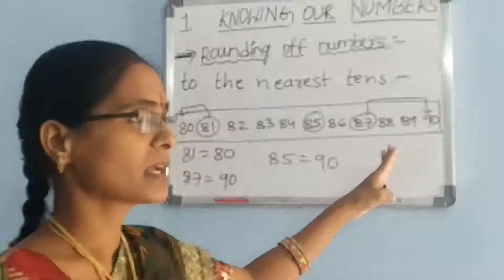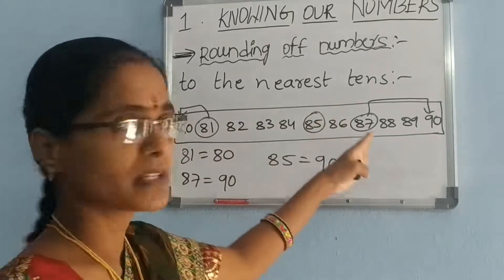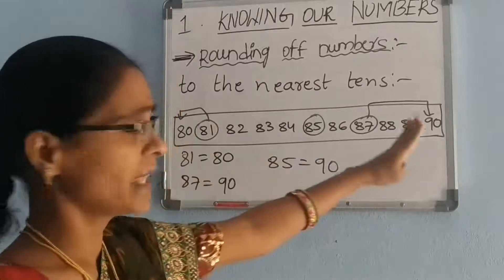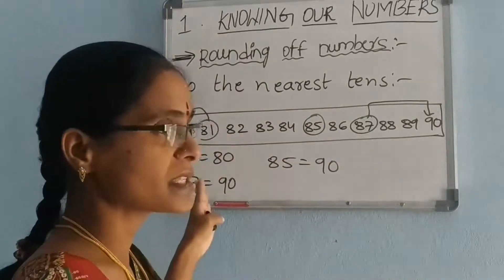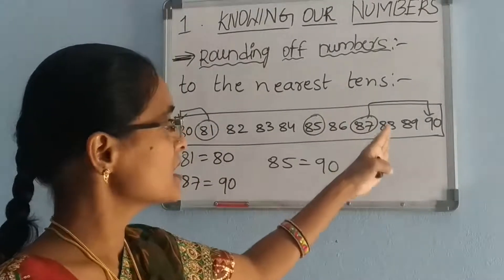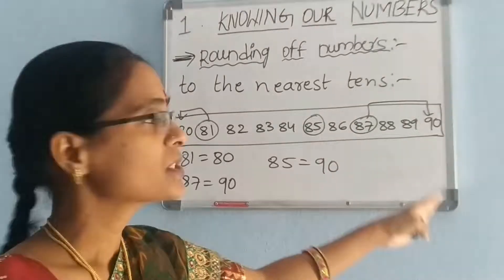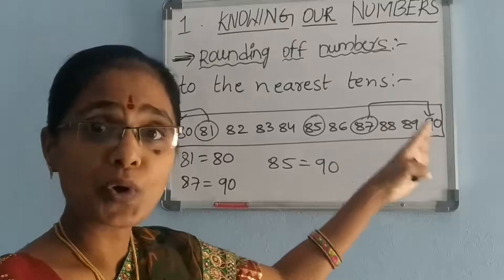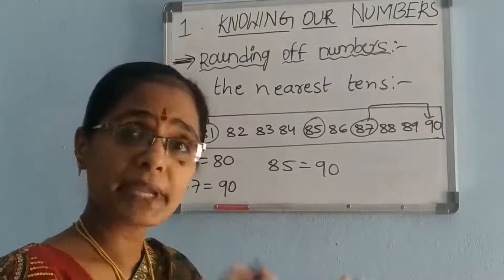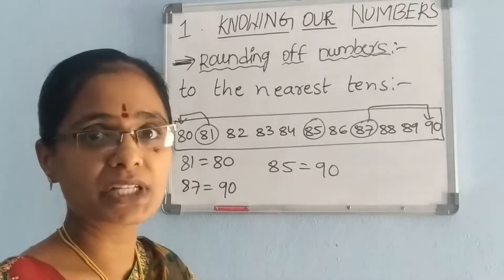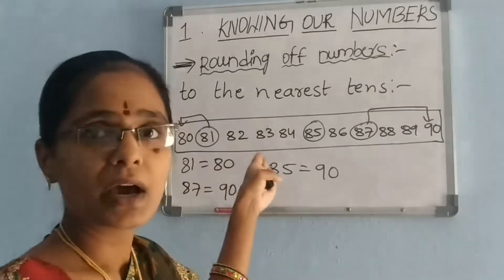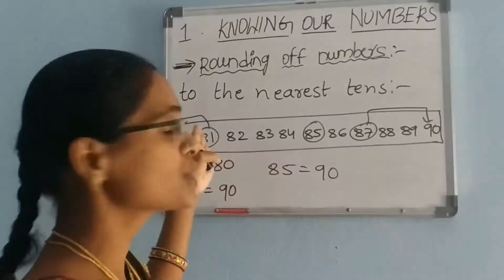80 to 90 numbers are given. 81 is rounded — 81 is nearest to 80 than 90, so 81 will be rounded to 80. 87 is nearest to 90, so 87 will be rounded to 90. But 85 is at equal distance from 80 and 90, and by convention it is rounded up to 90. This is the example for rounding of numbers to the nearest tens.